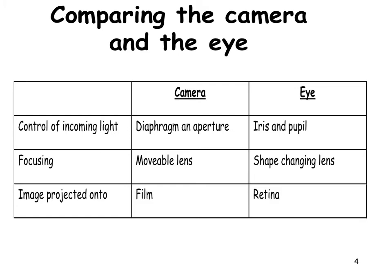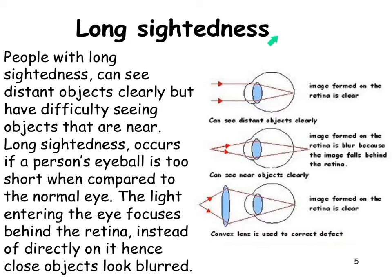Light comes in through an aperture or a pupil. The size of the pupil is controlled by the iris; in a camera it's controlled by the diaphragm. For focusing, in a camera the lens moves backwards and forwards, while in the eye the lens changes shape. The image goes onto a film or, in digital cameras, onto a pixel-collecting medium — and in the eye it is projected onto the retina.